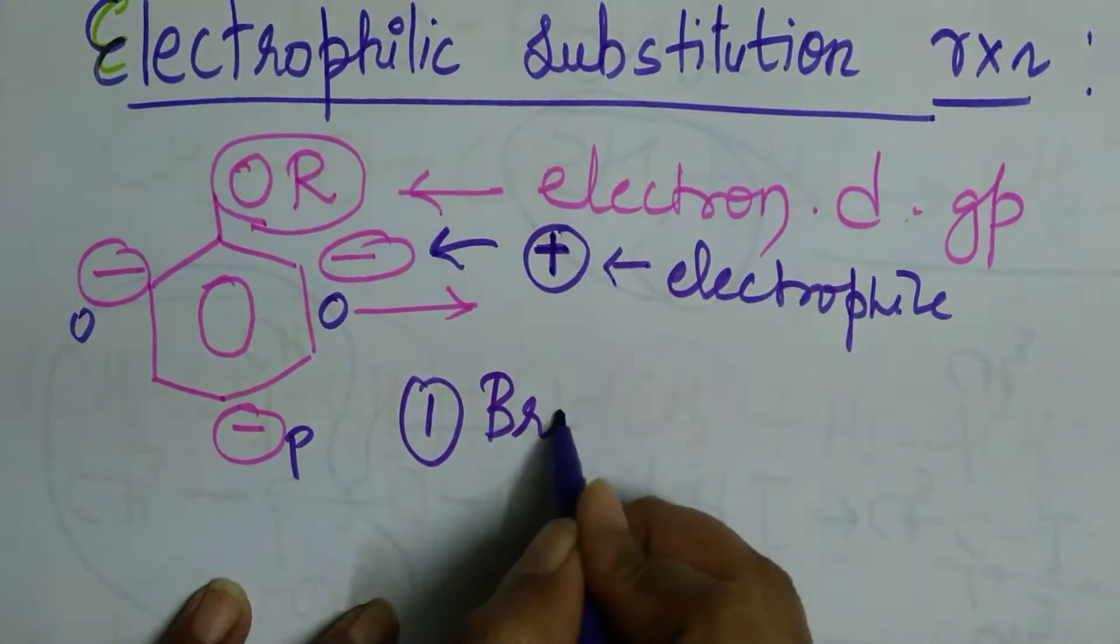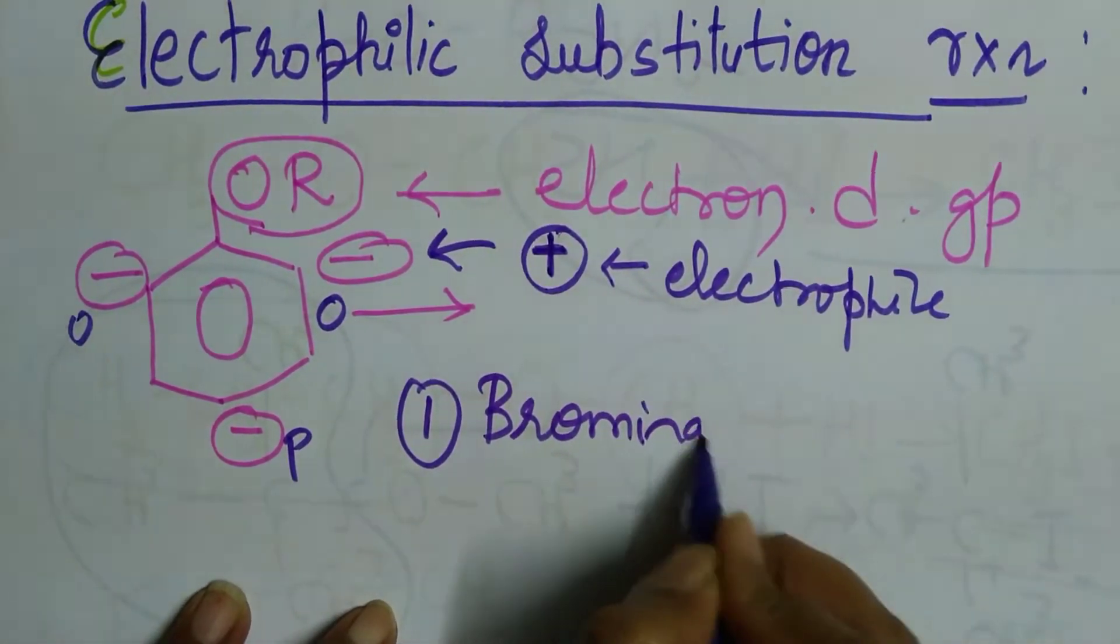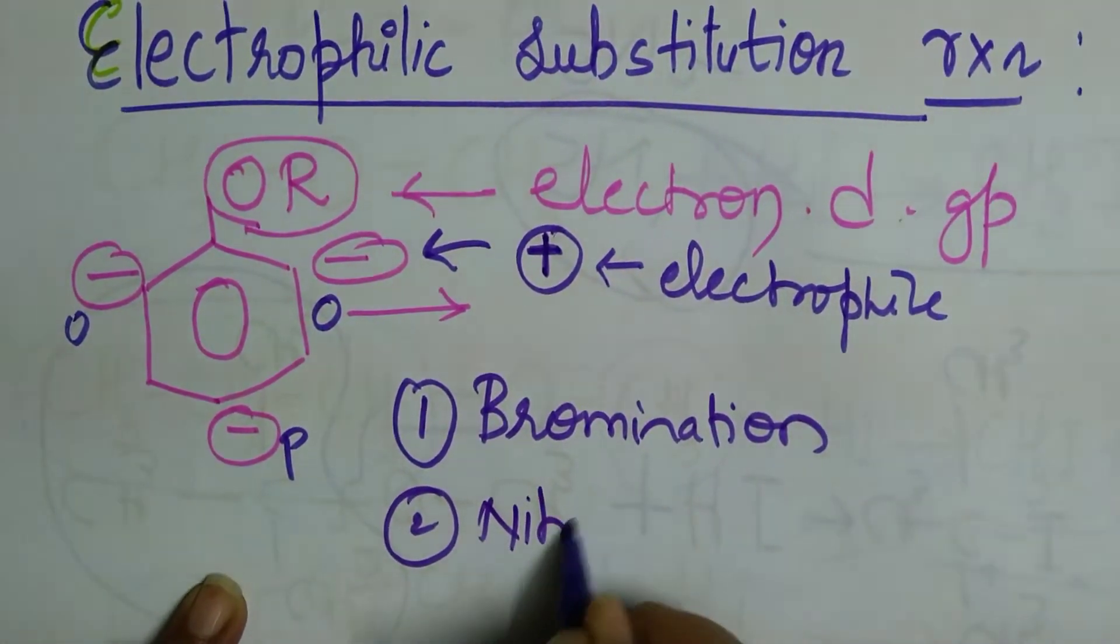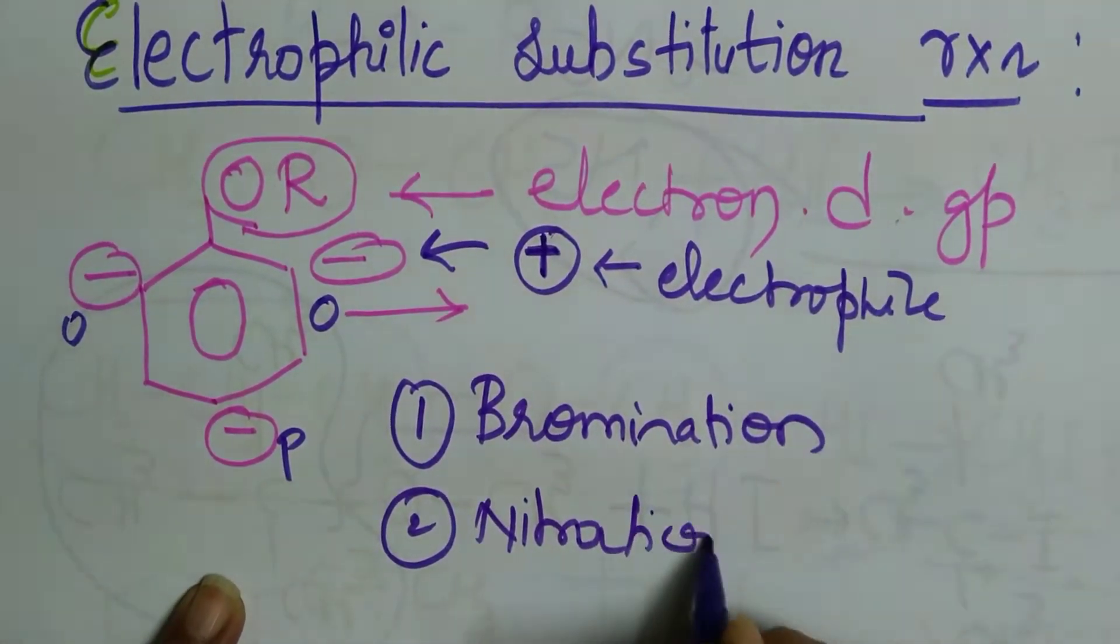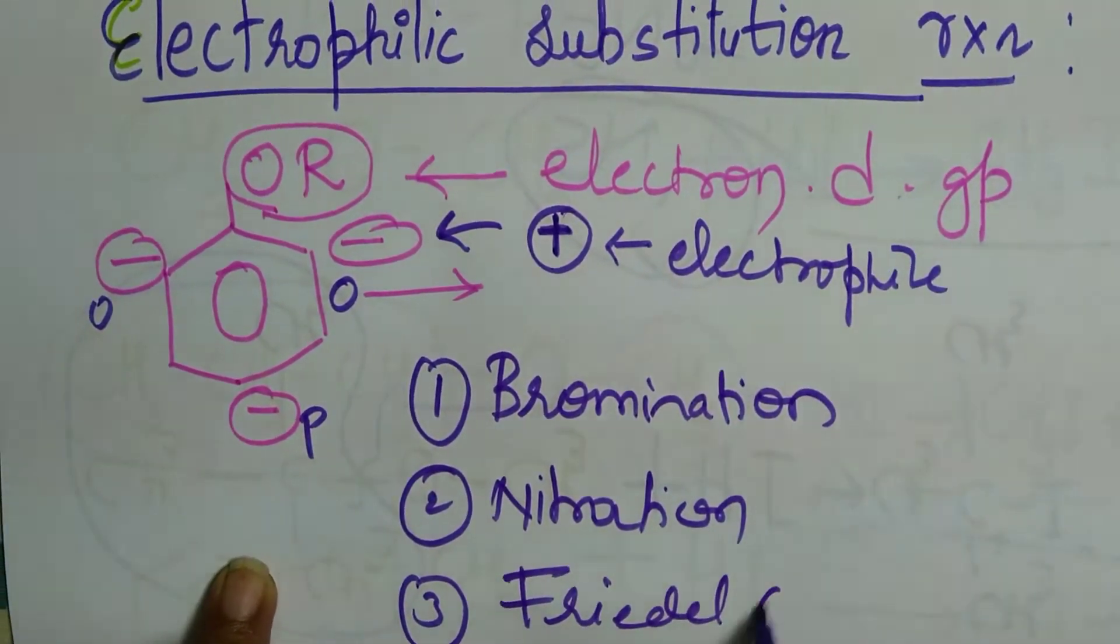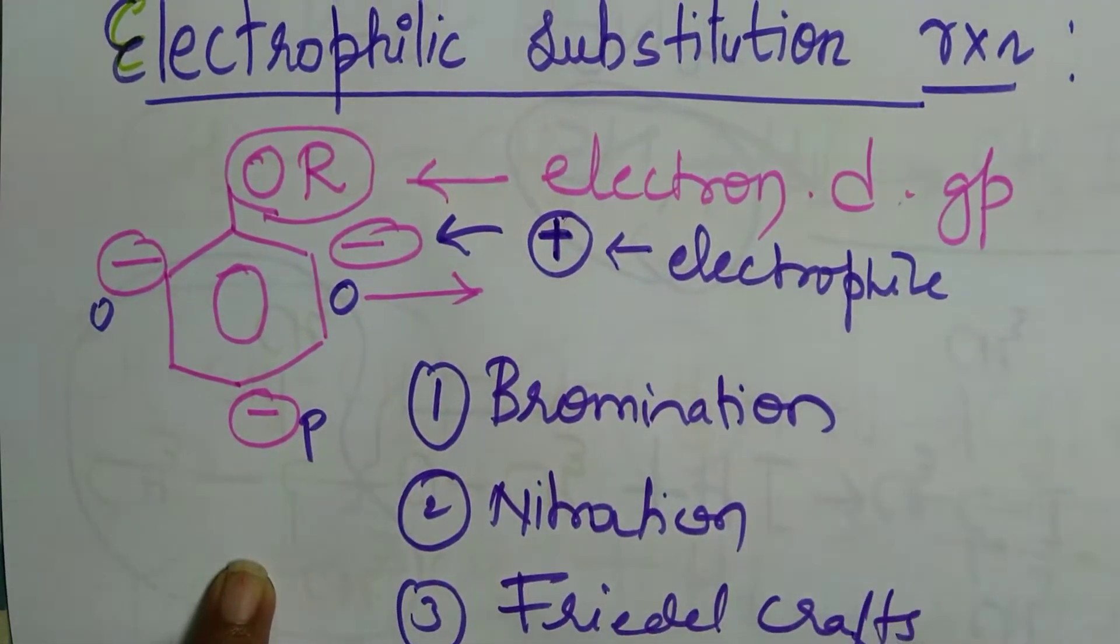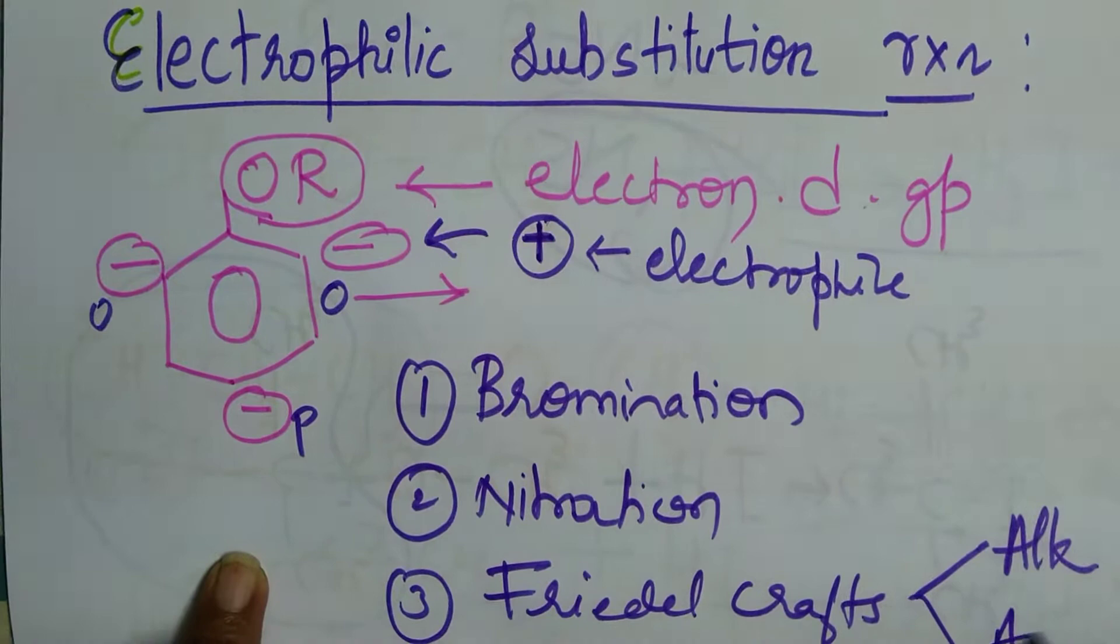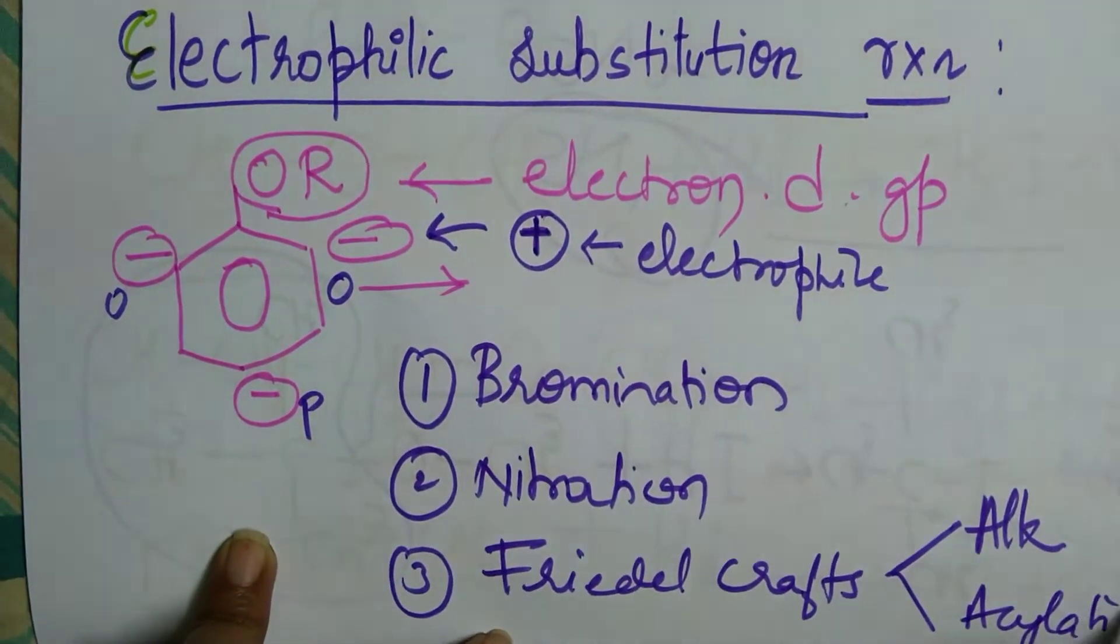One is bromination. Second one is nitration. And then we have Friedel-Crafts alkylation and acylation.